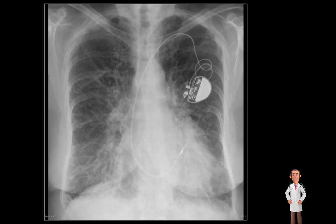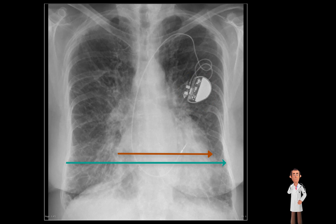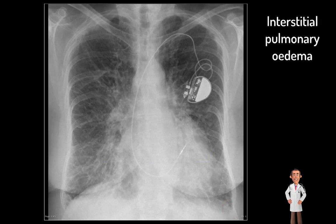Case three. In this radiograph we can see a single-lead permanent pacemaker in situ on the left. The heart is enlarged and there is a marked prominence of the interstitial lines and minimal blunting of the left costophrenic angle.